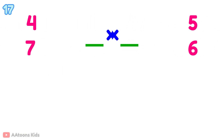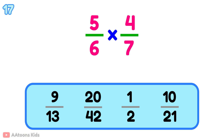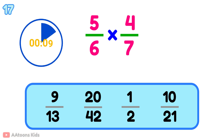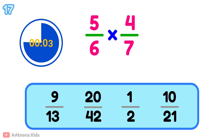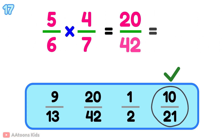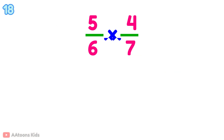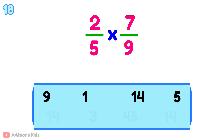What is 5 over 6 multiplied by 4 over 7? What is 2 over 5 multiplied by 7 over 9?